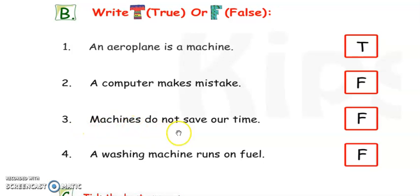Next, 3. Machines do not save our time. It is also wrong. Machines save our time. That's why we are using. Machines make our work very easy. We can do fast work with machines. So, the sentence is also wrong. It is false. And you have to write F for False.